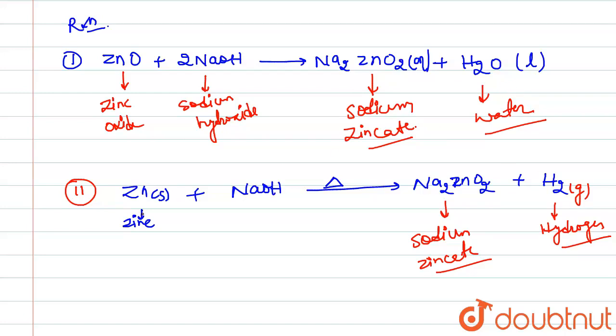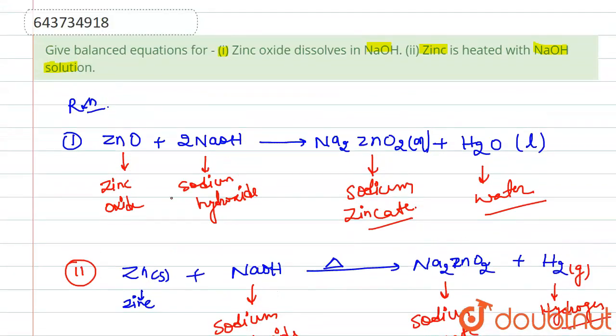oxide is not present here, so there will be only hydrogen gas. So we know that when zinc is reacted with sodium hydroxide and it is heated, then formation of sodium zincate plus hydrogen will take place. Thank you.